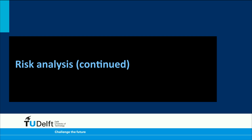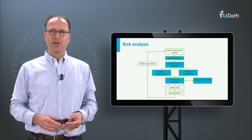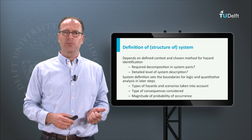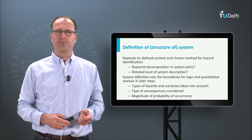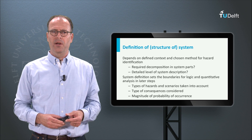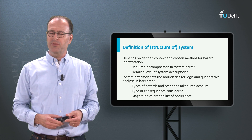After we've defined our context and criteria, we have to define what the system is whose hazards we want to control. When we know the system we can identify the hazards present and the associated risks. Then we ask ourselves how all that can happen — that is, what are the scenarios we want to focus on? We need to think hard about what system we are looking at. Are we looking at a particular installation, a particular plant, or at a whole site containing many different plants?